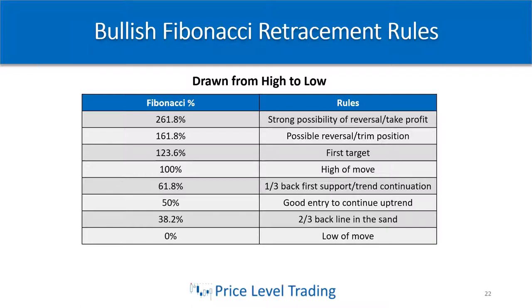Above the move, the 123.6% is the first bullish target. The 161.8% — two-thirds above — is a good target to take profit and at least trim your position, as a possible reversal could happen. A really extended extreme target would be adding 100% to that move. If you're already two-thirds higher at the 161.8% Fib, adding another 100% on top is more or less a two standard deviation move — we may be overextended and a strong reversal in the other direction is possible.